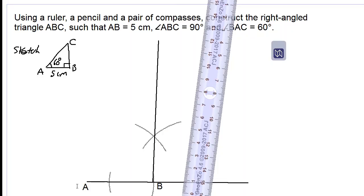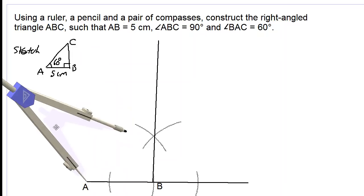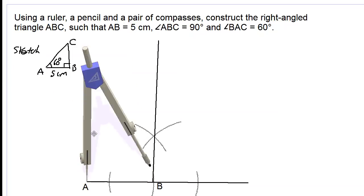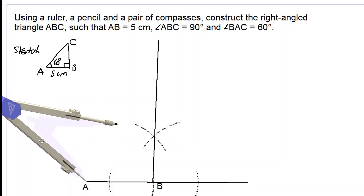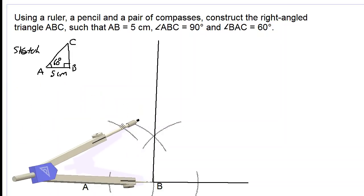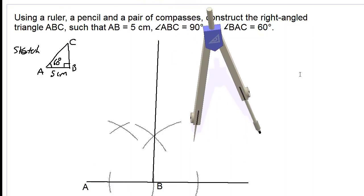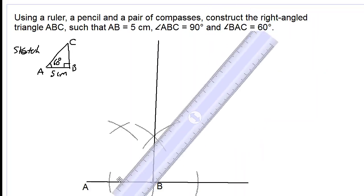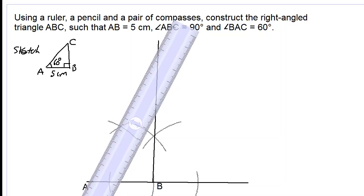We now want to construct a 60 degree angle at point A. We take our compass, place the pointer at point A, and stretch the compass out to 5cm. We draw an arc using our lighter pencil. We then place the point at point B and draw another arc to intersect the first arc. We take our ruler and draw a straight line passing through point A and the intersection point of the two construction arcs.